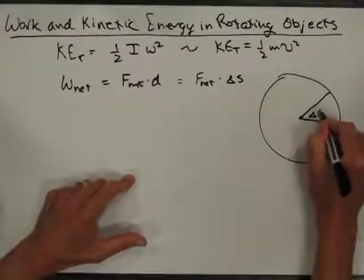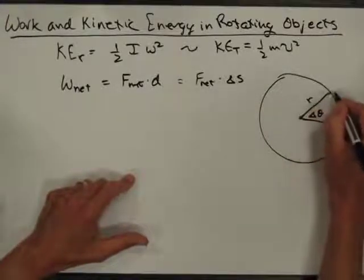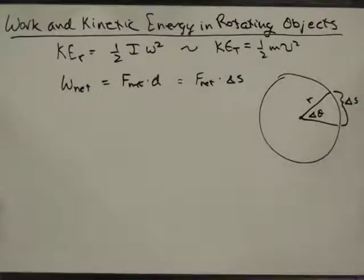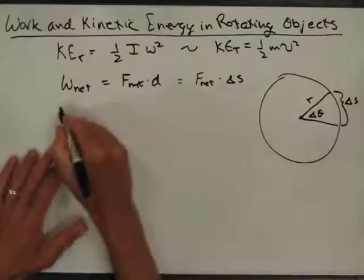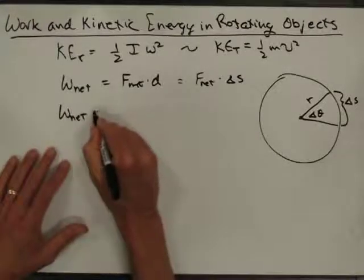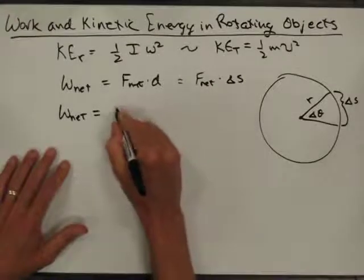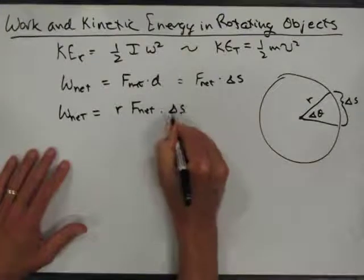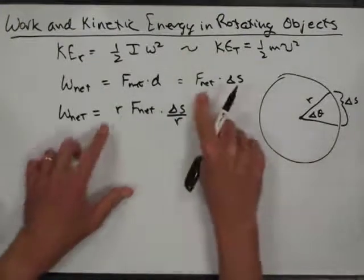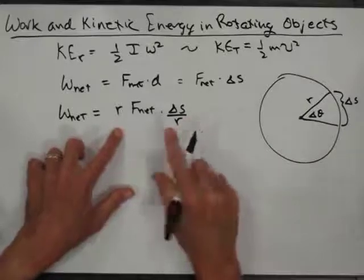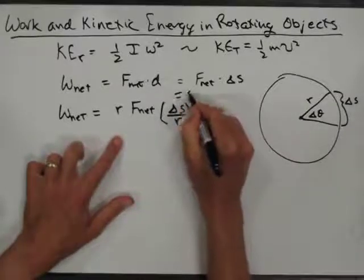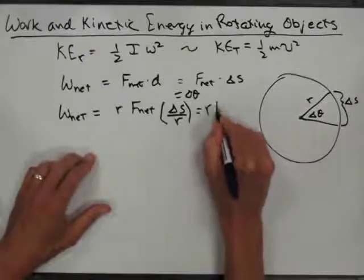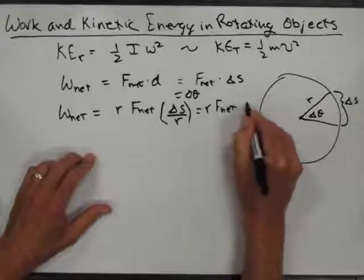If this is delta theta and this is r, the distance you traveled was delta s. I'm going to do a little fancy math here: I'm going to say r times F_net times delta s over r — in other words, multiply and divide by r. Then this piece, delta s over r, is equal to delta theta from the definition of radians. So this becomes r times F_net times delta theta.